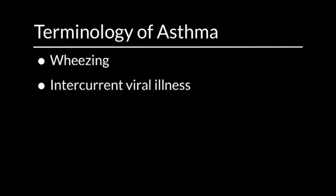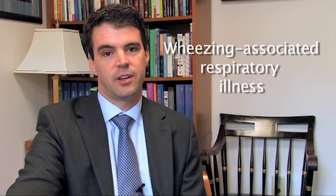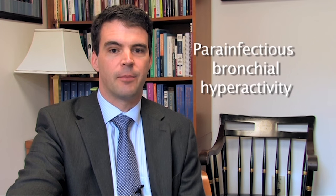Asthma is a very common disease — in fact the most common disease of childhood — and that's why it's very likely that as pediatric intensivists we will encounter a child with asthma in the pediatric ICU. The terminology of asthma has been quite confusing. A child with wheezing, an intercurrent viral illness, and respiratory distress could be called reactive airway disease, wheezy bronchitis, asthmatic bronchitis, wheezing-associated respiratory illness, para-infectious bronchial hyperactivity, or asthma — and probably all of those terms are suitable as a diagnosis.